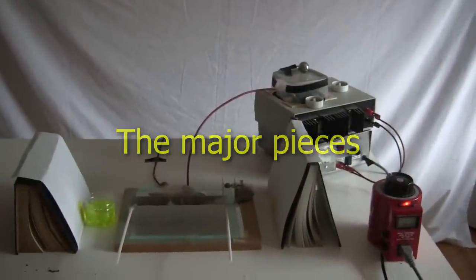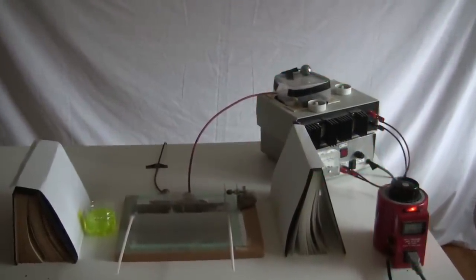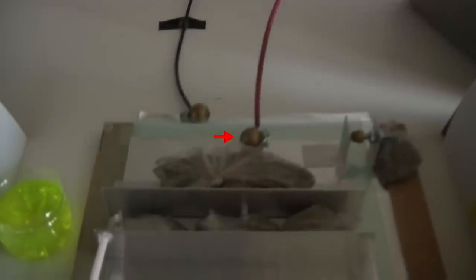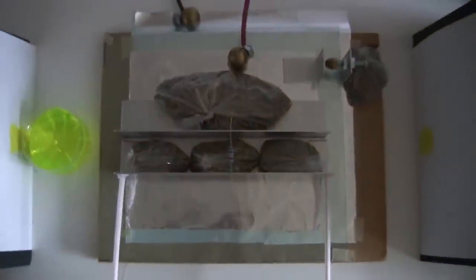Here are the major pieces that are needed. This is my homemade high voltage power supply. This ball is connected to earth ground. And this ball is high voltage positive. There's a spark gap here. There's also a very long spark gap here. That's where the lasing happens, the creation of the laser beam.